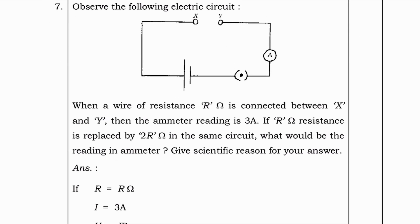Let's go to next question. Observe the following electric circuit. And the question is, when a wire of resistance R ohm is connected between X and Y, then ammeter reading is 3A. If R ohm resistance is replaced by 2R ohm in the same circuit, what would be the reading in ammeter? Give scientific reason for your answer.